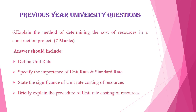The sixth question is: explain the method of determining the cost of resources in a construction project, asked for seven marks. The method used for determining the cost of a resource in a construction project is the unit cost method or unit rate method. You have to define what is unit rate, specify the importance of unit rate and standard rate, state the significance of unit rate costing of resources, and briefly explain the procedure for unit rate costing of resources.